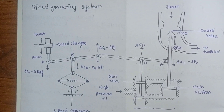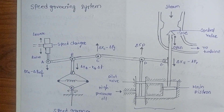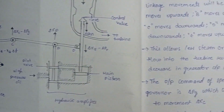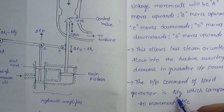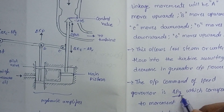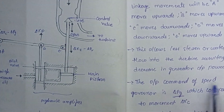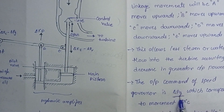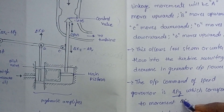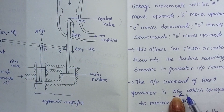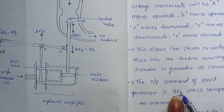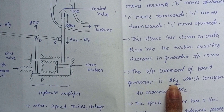The output command of the speed governor is delta PG. The output of the speed governor corresponds to the movement of delta XC. Delta is changing because speed is changing — as speed changes, delta changes, and this determines the output of the speed governor.